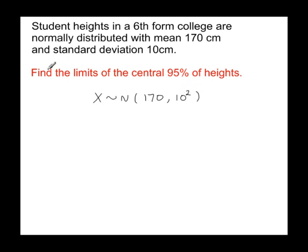We're looking for the limits within which 95% of all student heights lie. First of all, we need a formula that we're going to use for this, and the formula is X equals population mean plus or minus z times the population standard deviation. So we need to know all of these values here.